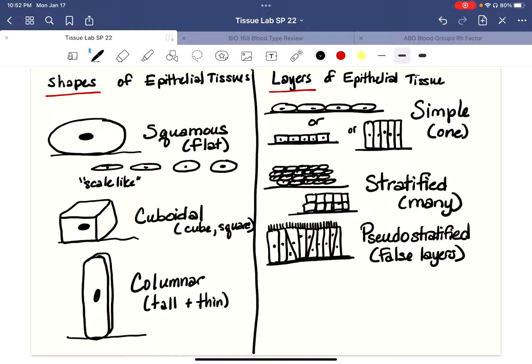Now the last one is called transitional. Transitional. And that has a many-layered appearance. So this would appear to be different cell types. I'm going to leave that part off and draw it, and then when we actually define transitional as a tissue, it'll make sense.